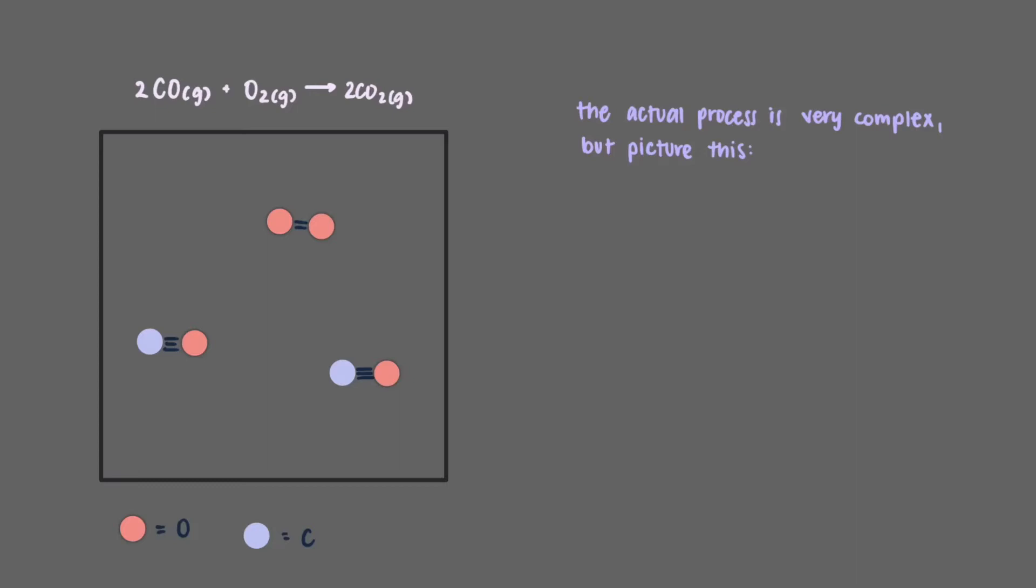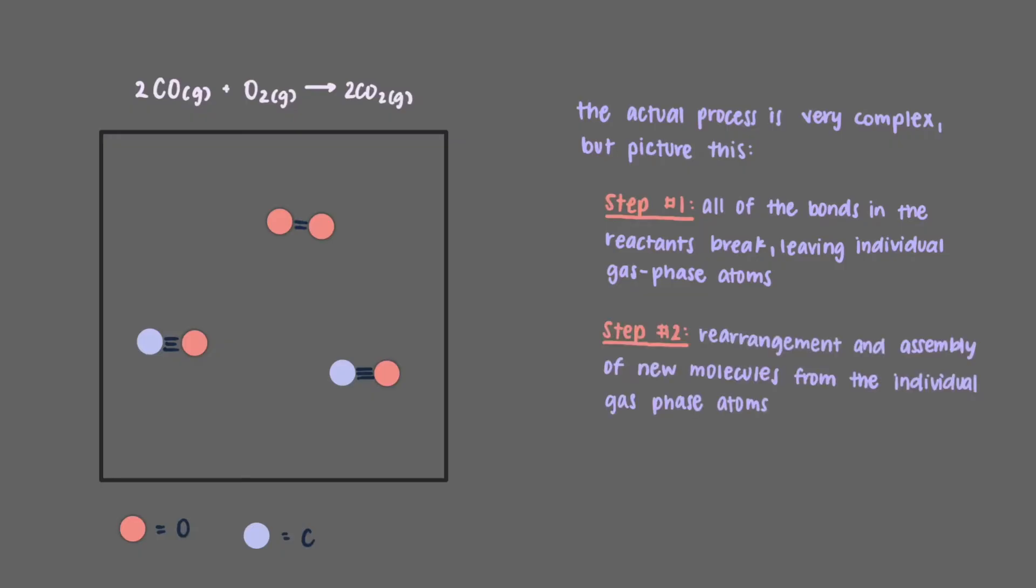Let's imagine that the reaction takes place in two steps. In step one, all of the bonds in the reactants break, leaving nothing but individual gas phase atoms floating around. In step two, we'll rearrange and assemble new molecules from these gas phase atoms. If that process sounds ridiculous, that's okay, because it is.